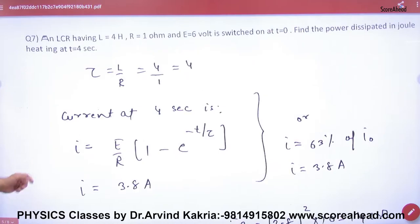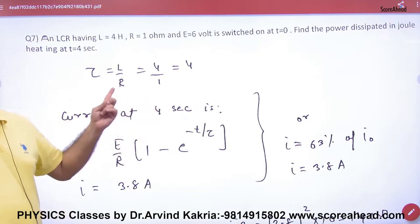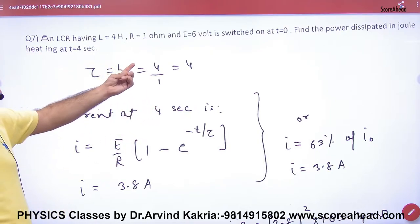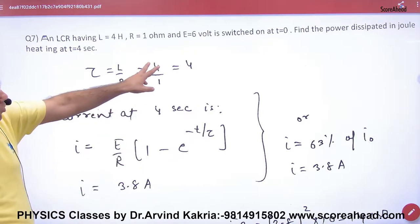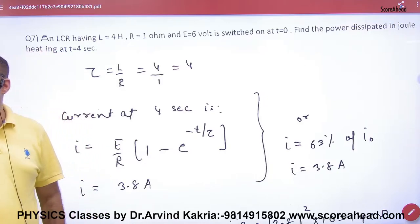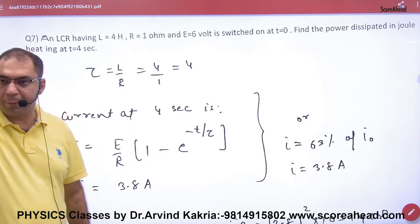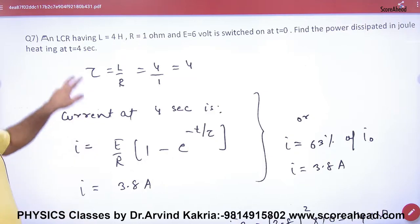Next is an LCR circuit — having L, C, R. The battery is 6V and it is switched on. When the switch is on, current will grow. Find the power dissipated at time t = 4 seconds.